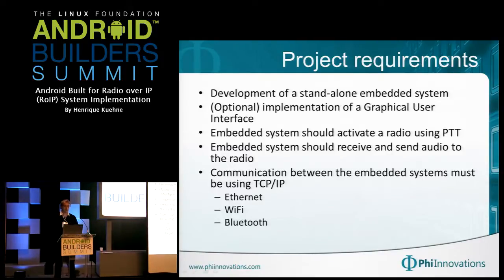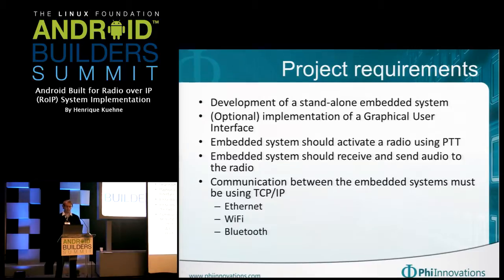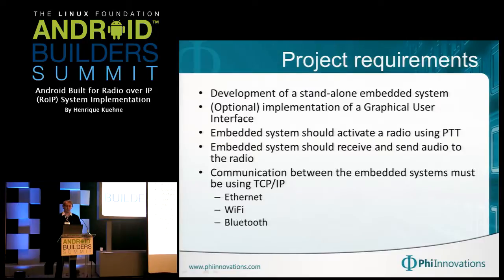These were the requirements for the project: development of a standalone embedded system, implementation of a graphical interface — this was an official feature. The system should activate a two-way radio using PTT. For the analog signal treatment, we have to convert it to digital, and on the other side convert back from digital to analog to return it to the radio. Communication between both sides uses TCP/IP. Bluetooth is used for other functions, not for communication between the two sides.